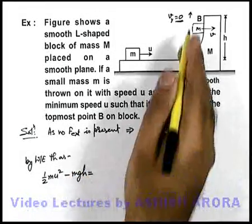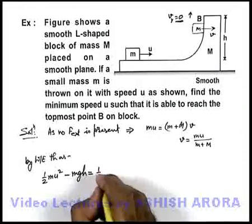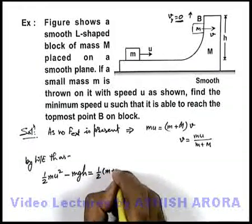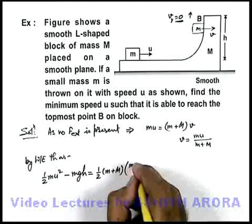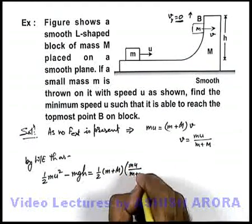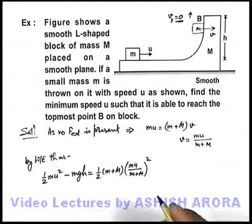This must be equal to the final kinetic energy of the system that will be half small m plus capital M into the speed that is m u by small m plus capital M whole square. This is the way how we analyze.